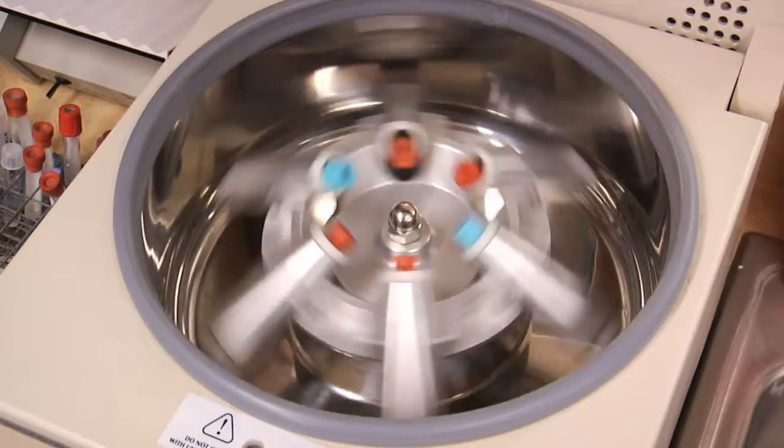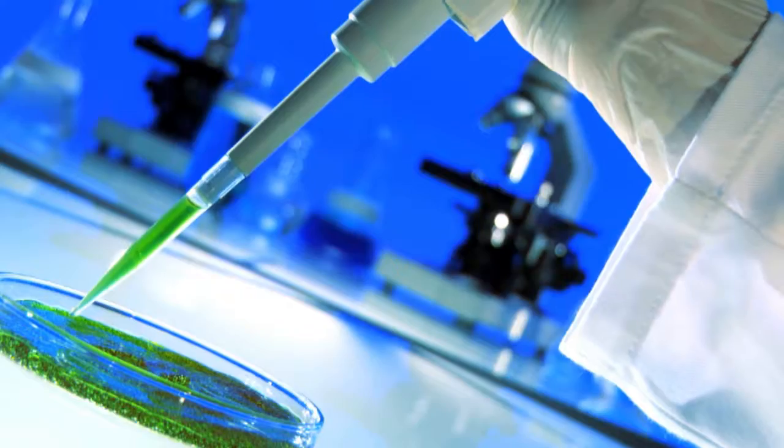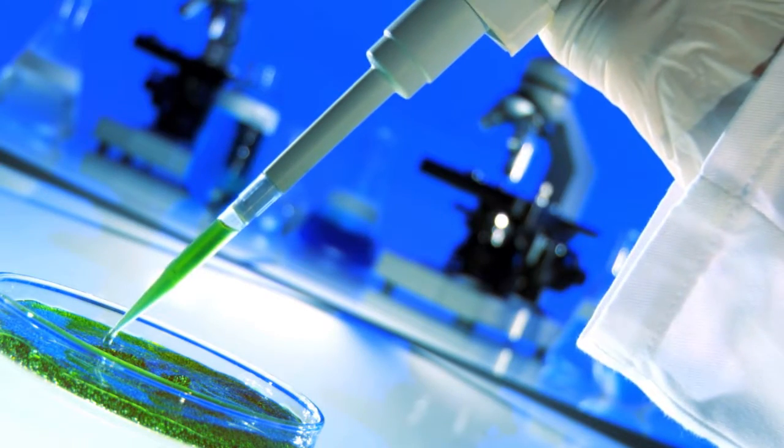Laboratory technicians then separate the stem and fat cells by using a centrifuge system. From here, the stem cells are placed in a petri dish and given food they need to grow.